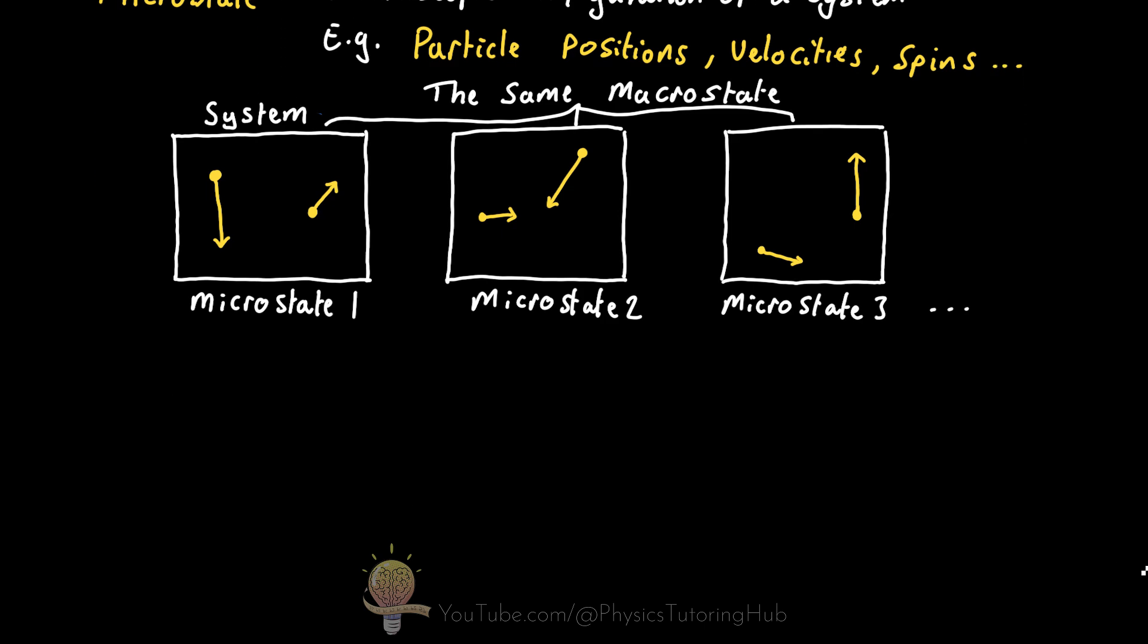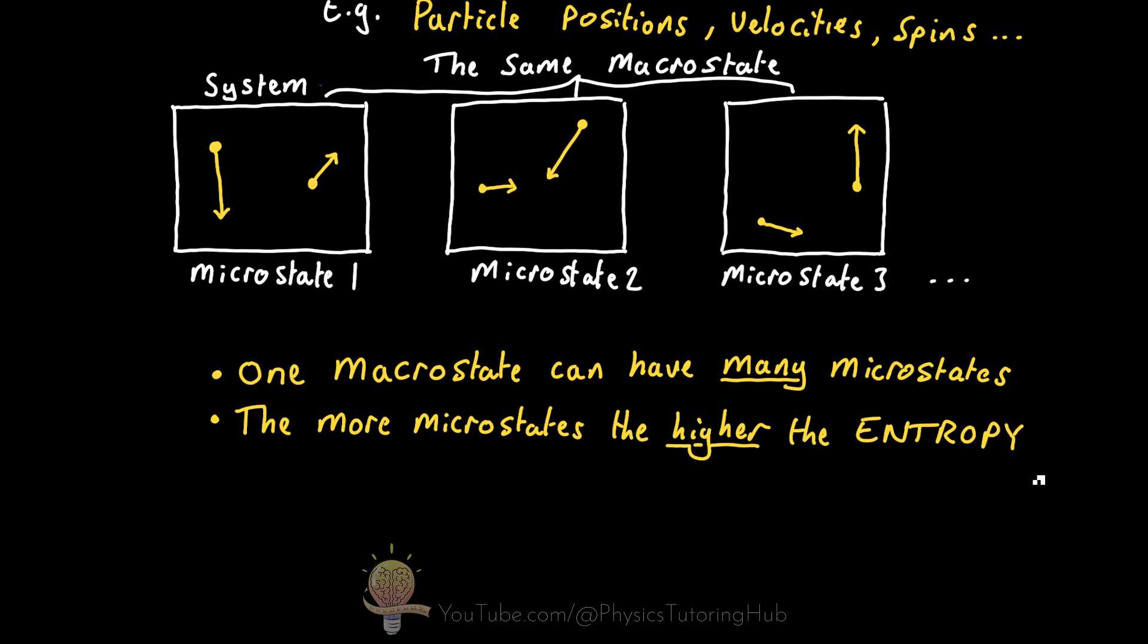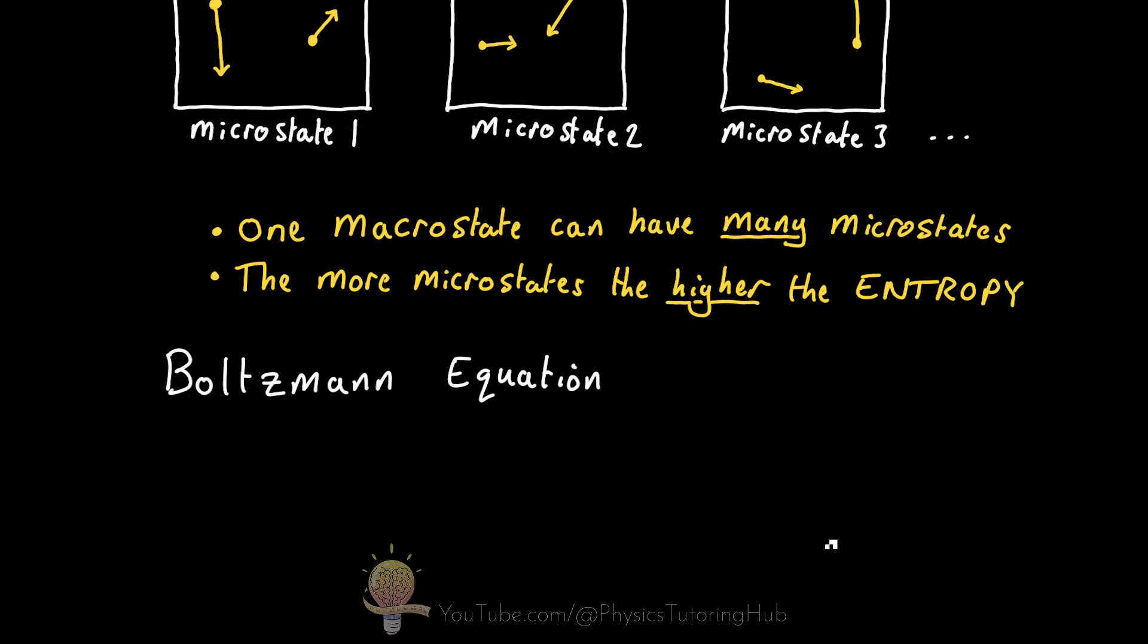So a single macrostate can have many different microstates. And the higher the number of microstates associated with a single macrostate, the higher the entropy is for that macrostate. So if we know the number of microstates that correspond to a given macrostate, we can use the Boltzmann formula to calculate the entropy.